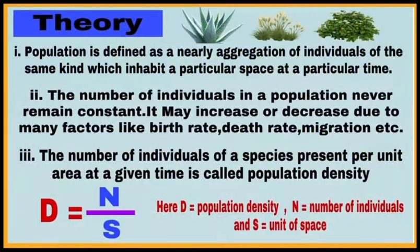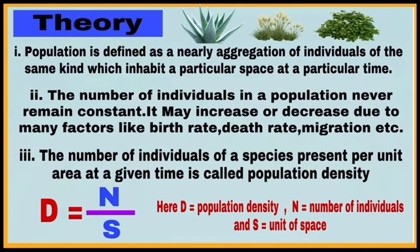Next, write the theory of the experiment. First, define population. Population is defined as a nearby aggregation of individuals of the same kind — individuals of the same species living in a particular space or area at a particular time. The number of individuals in a population is not constant; it may increase or decrease due to many factors like birth rate, death rate, migration, etc.